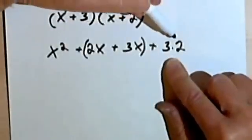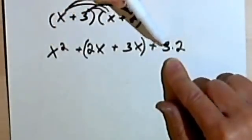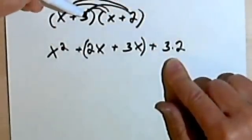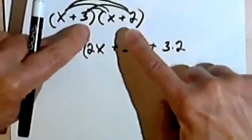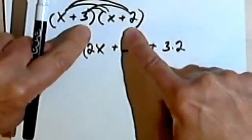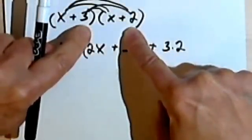The last term we get when we multiply out, this 3 times 2, is what happens when we multiply the second term in each binomial.